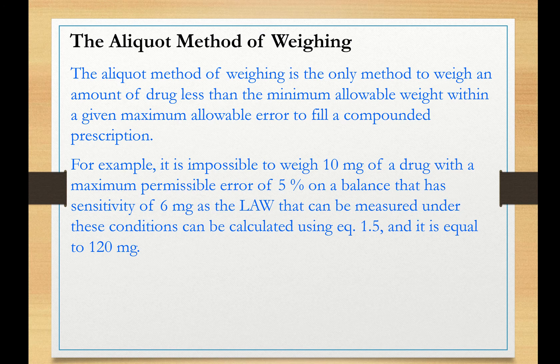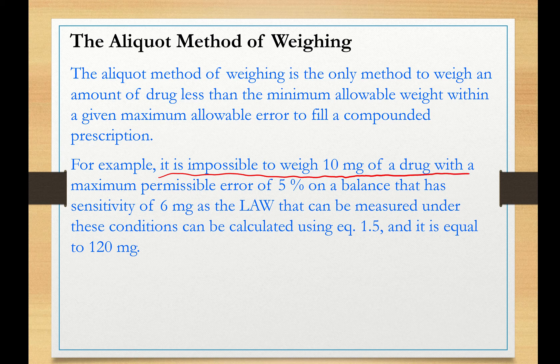To my knowledge, this is the only method that can be used to weigh a drug amount less than the least level weight without exceeding the maximum level error. For example, as we have learned in Lesson 2, it would be impossible to weigh 10 milligrams of a drug with a maximum level error of 5% on a balance of SR 6 milligrams.